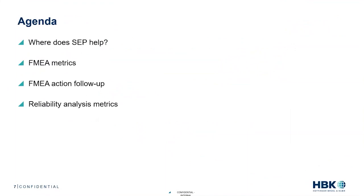Our agenda today is four parts. First, where does SCP help — where and when is SCP a good solution for me? And then we're going to talk about three particular situations where SCP can really provide some benefit: FMEA metrics, FMEA action follow-up, and then reliability analysis metrics. Each of these three situations is going to be accompanied by a short demonstration in the software. I encourage you to type in questions at any point, and I'll answer questions more comprehensively in a Q&A session at the end.